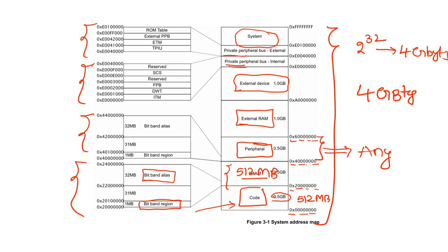You cannot change this. You have to use these addresses only. If you want to fetch the code, then you have to use 0x00000000 only. You can't use 0x40000000 for fetching code, because these are already designed by the designers of ARM Cortex-M4. You cannot change anything; you have to use the same addresses and the same regions for the particular operation.